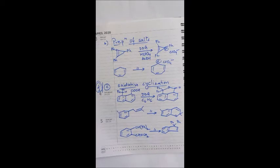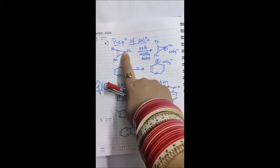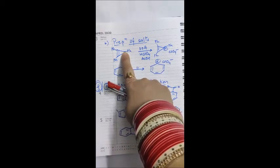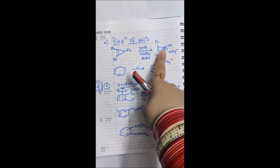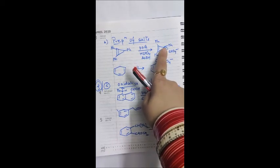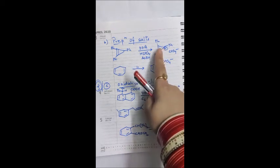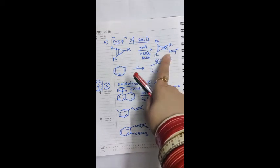Now let's study the next type of usage for DDQ: preparation of stable salts. DDQ is used with specific acids such as perchloric acid (HClO4). Compounds with one sp3-hybridized carbon can lose their H as a hydride ion, forming a carbocation that can undergo resonance. The positive charge is delocalized over three carbons, and a stable salt forms with the acid.